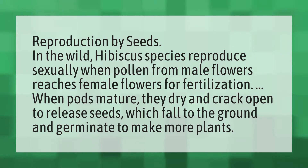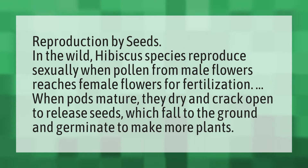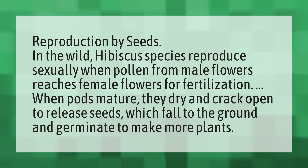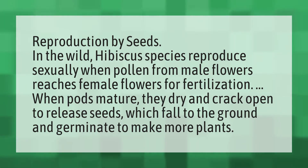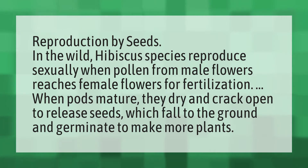Reproduction by seeds. In the wild, hibiscus species reproduce sexually when pollen from male flowers reaches female flowers for fertilization. When pods mature, they dry and crack open to release seeds which fall to the ground and germinate to make more plants.